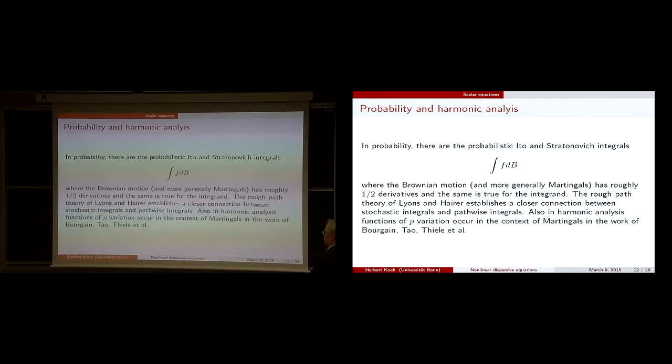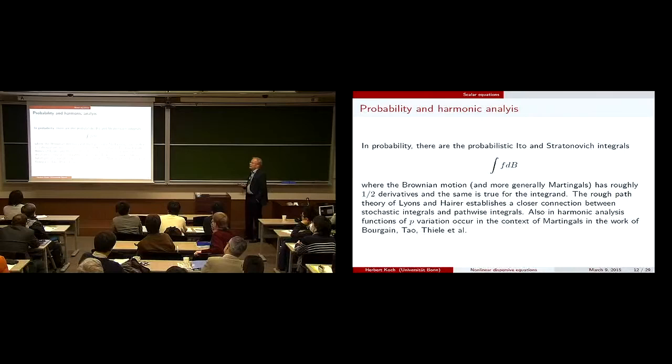The rough path theory of Terry Lyons is one of the places where V^p spaces, the bounded p-variation, occurred a lot. In harmonic analysis, functions of p-variation occurred in the context of martingales, in the work of various authors, which is something I realized much later than when I started with these things.